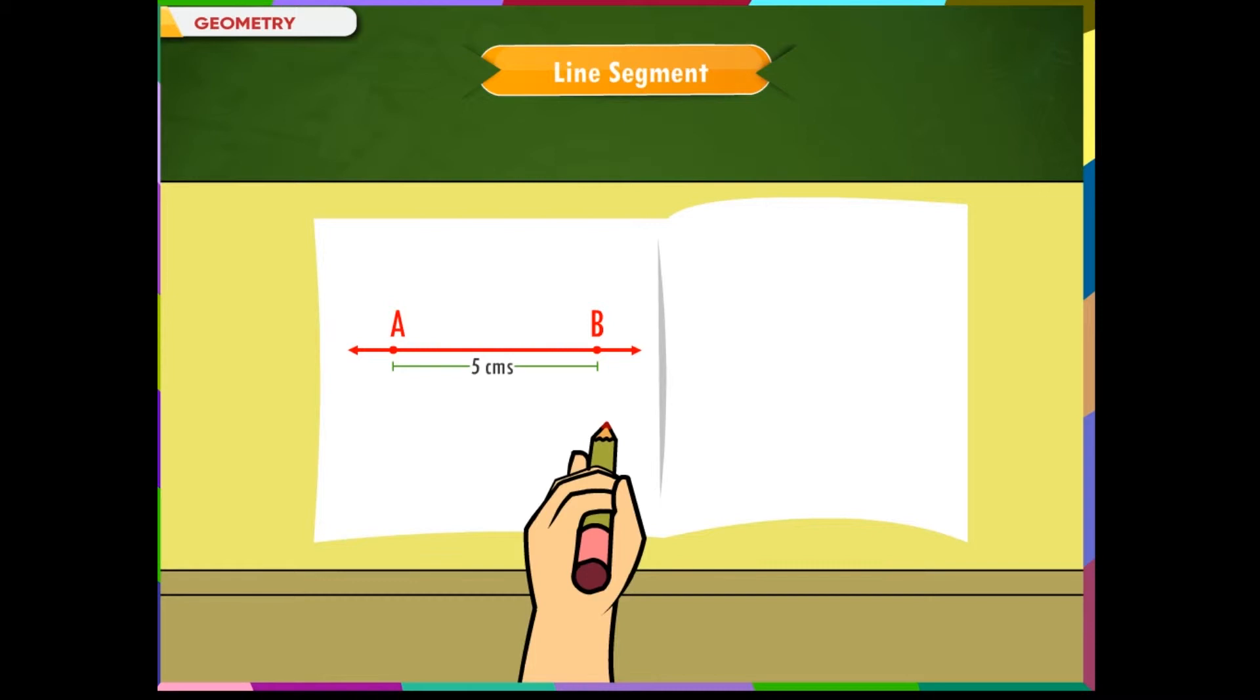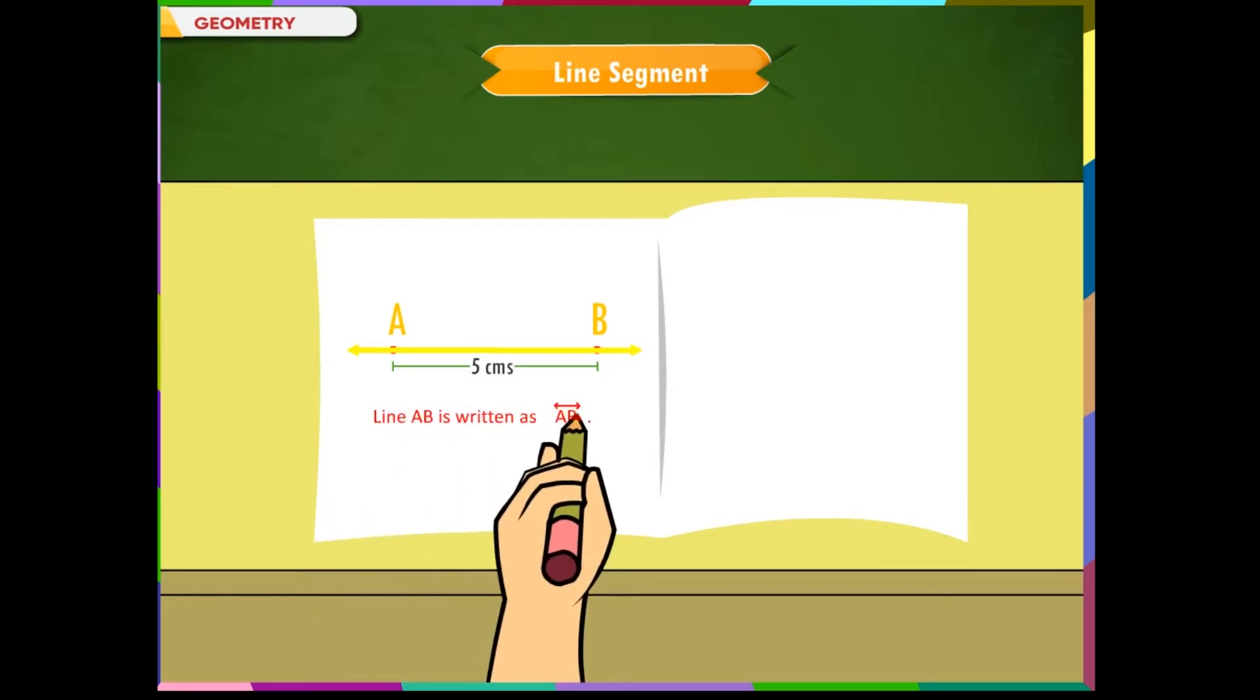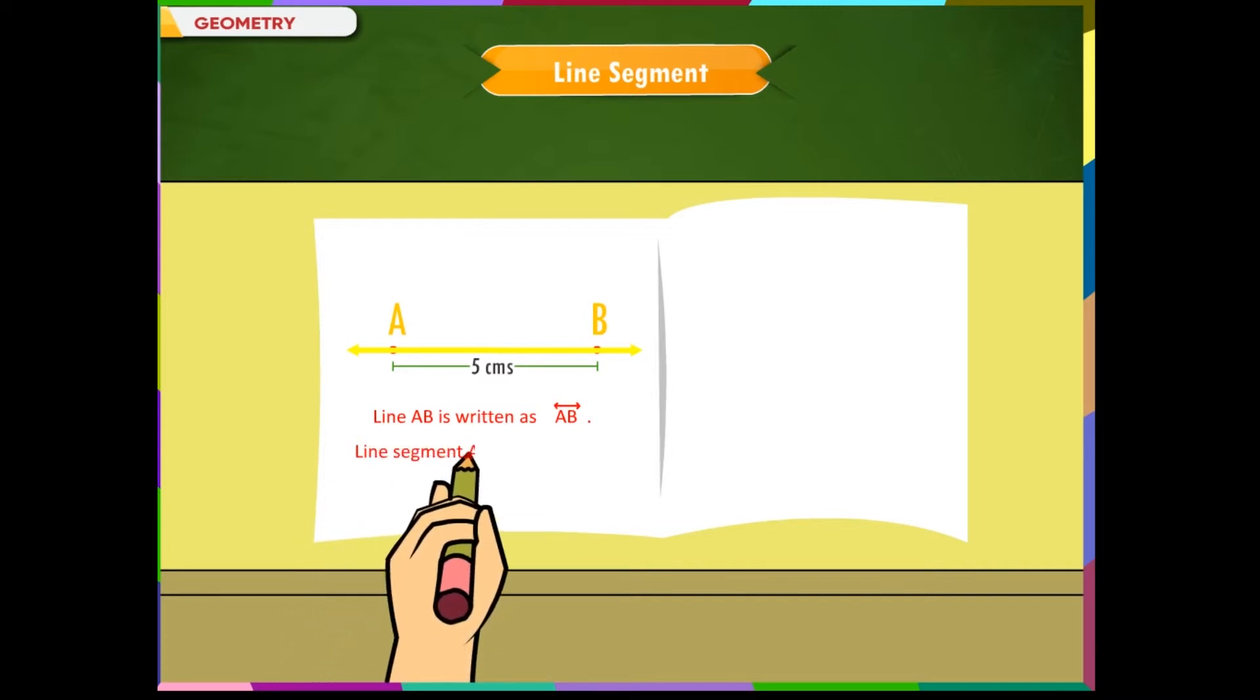So, we can say that a line is made up of an infinite number of points that extend indefinitely in either direction. A line segment is a part of a line. It has a definite length and it has two end points. If a line segment from A to B is extended beyond A in one direction and beyond B in the other, then we get a line AB.